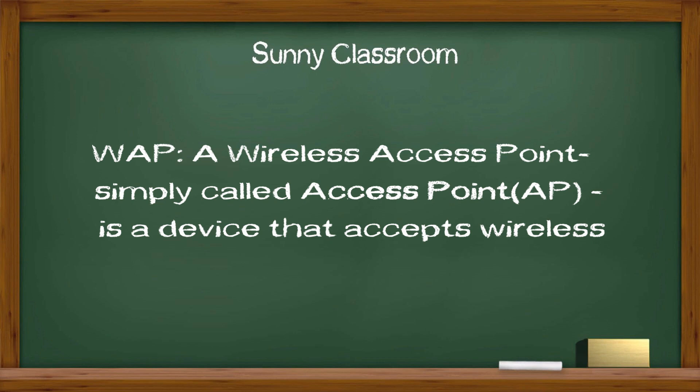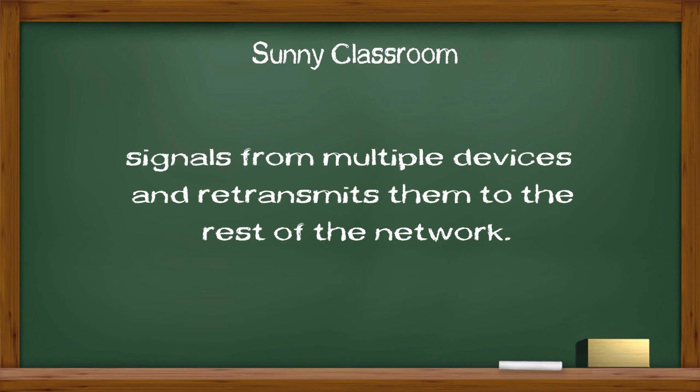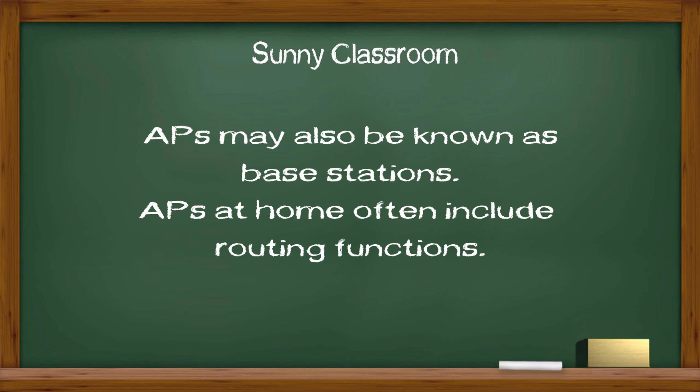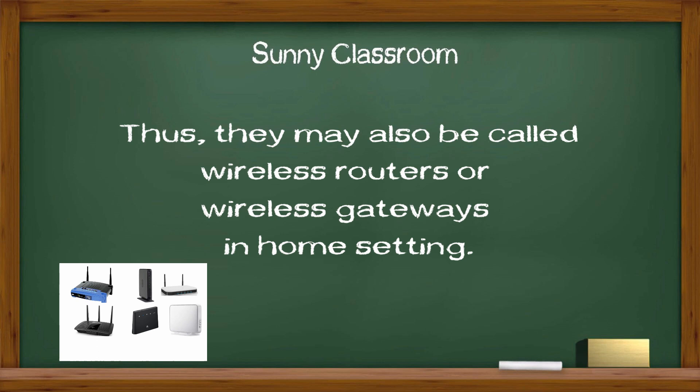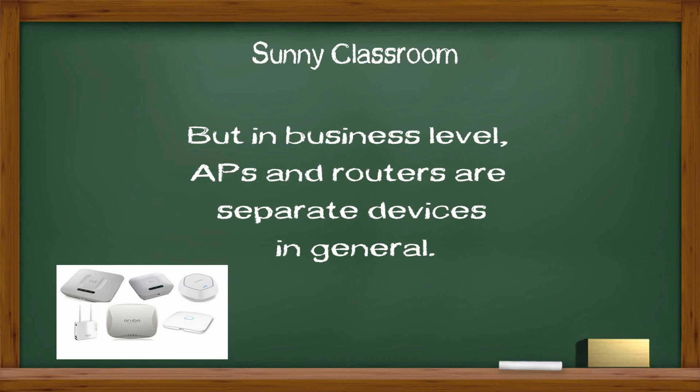WAP, a wireless access point, simply called access point or AP, is a device that accepts wireless signals from multiple devices and retransmits them to the rest of the network. APs may also be known as base stations. APs at home often include routing functions, thus they may also be called wireless routers or wireless gateways in a home setting. But at the business level, APs and routers are separate devices in general.